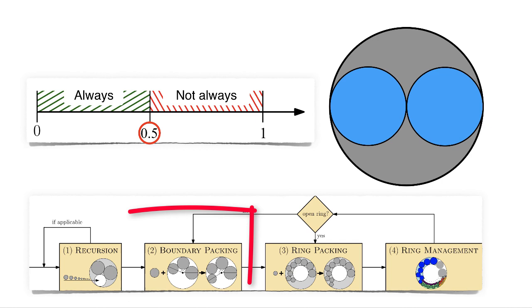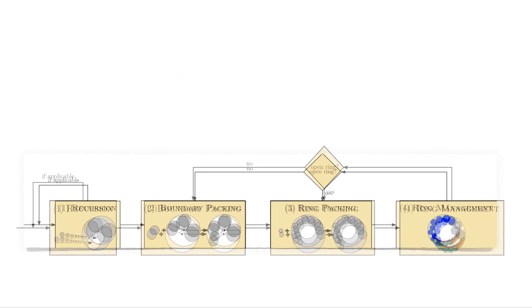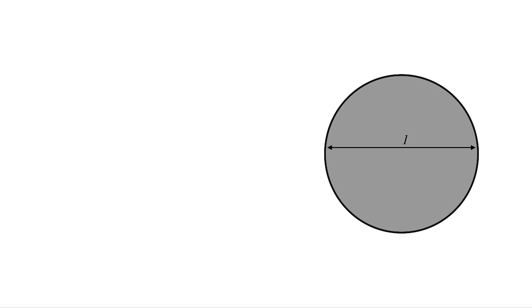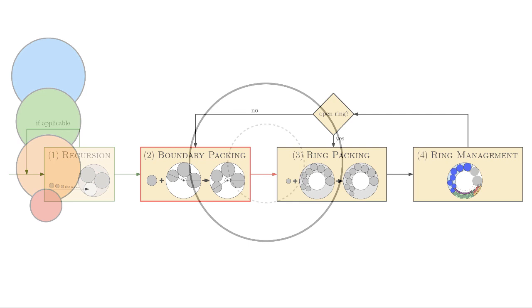A recursive call, boundary packing, ring packing and ring management. The recursion proceeds if the largest two disks have radii larger than 0.495 times the size of the container disk, leaving only very little area for the remaining disks. We proceed by placing the two large disks and recursively packing the remaining disks into a smaller container disk. The second subroutine is boundary packing.